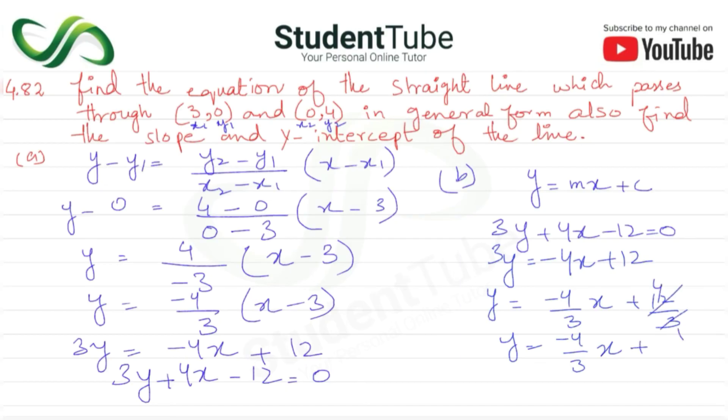So m, the slope, is minus 4 upon 3, and the y-intercept is equal to 4. That's the answer.